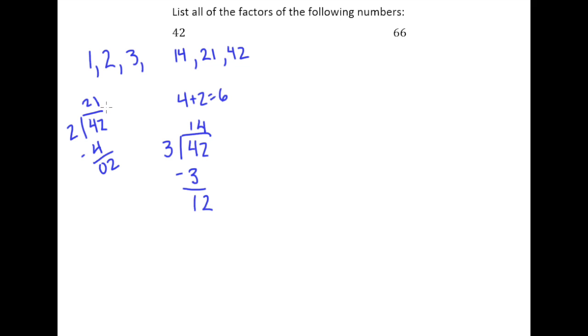I know 5 is not a factor of 42 because it does not end in 5 or 0. But I do know 6 is a factor of 42. Because if ever a number has 2 as a factor and 3 as a factor, 6 automatically is also a factor.